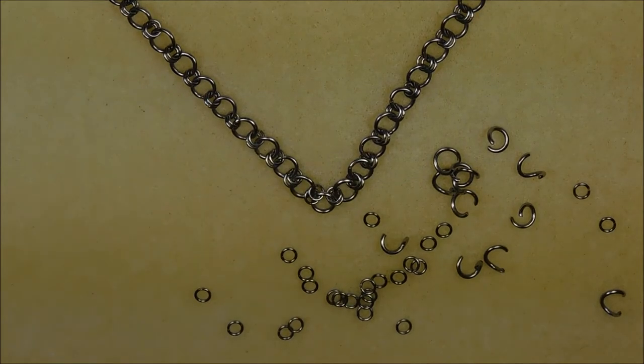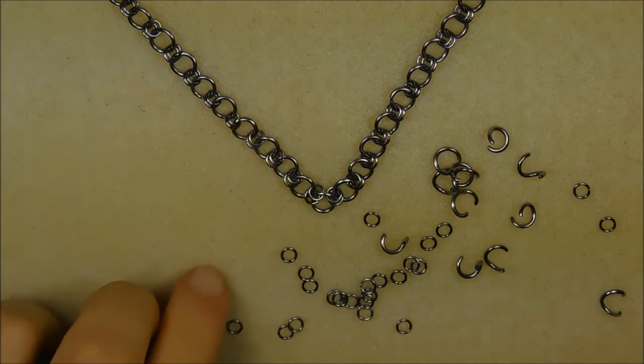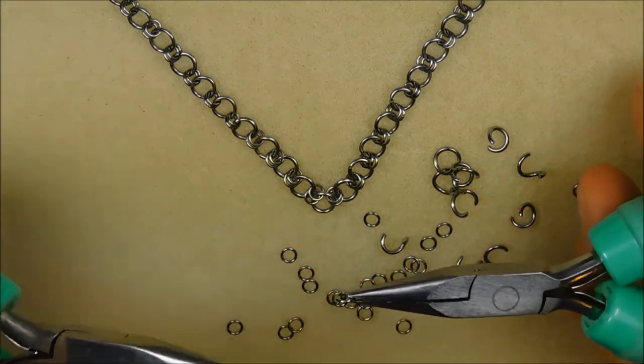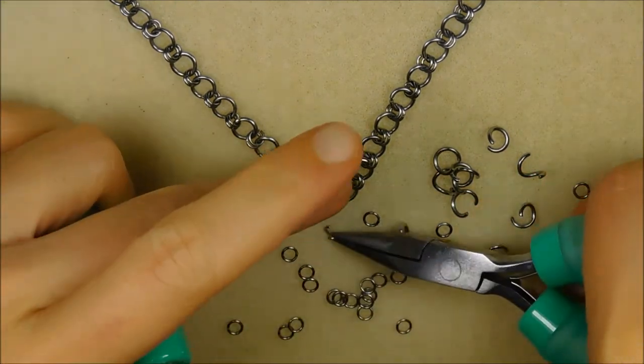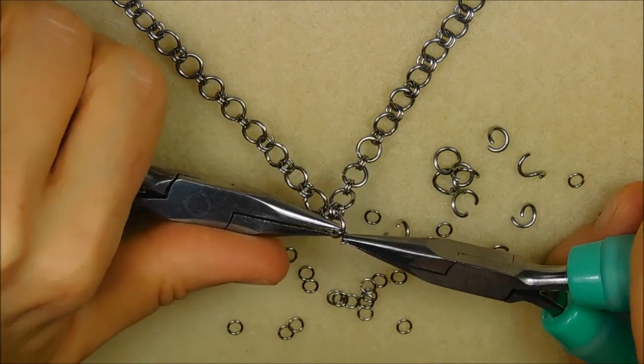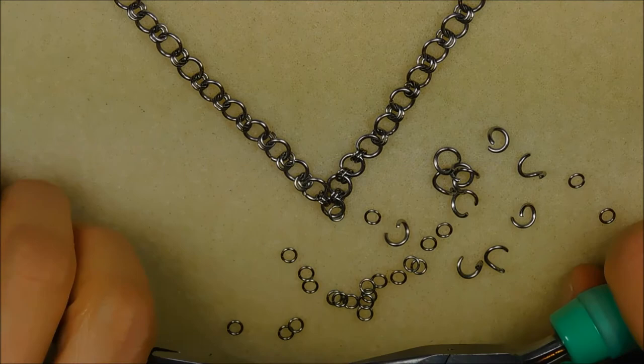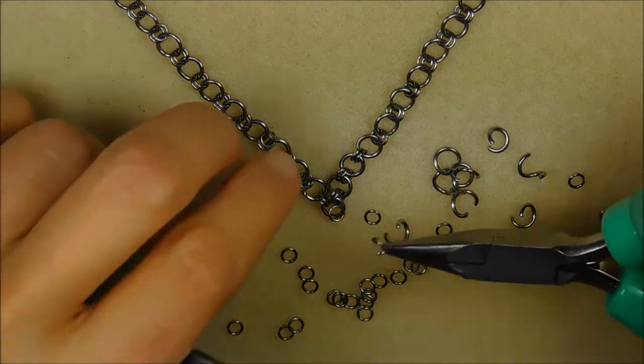Moving on to the connector chain. Run a four millimeter ring through the 16th six millimeter ring, which will also be the 31st segment from the non-clasp end of the chain. Close the ring. Run another four millimeter ring through exactly the same path and close.